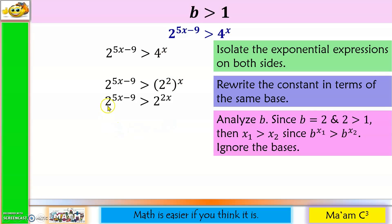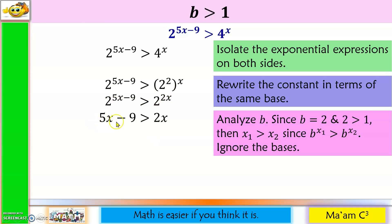Step 3: let us analyze our base. Our base is 2, and 2 is greater than 1. So x sub 1 is greater than x sub 2 because b raised to x sub 1 is greater than b raised to x sub 2. So let us ignore the bases and focus our attention on the exponents: 5x minus 9 is greater than 2x. The inequality symbol is retained because our base is greater than 1.